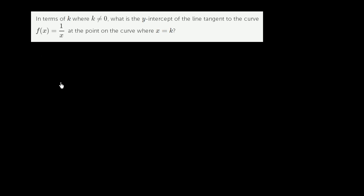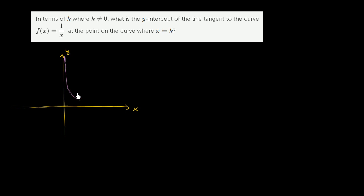So let's just think about what they're asking. Let me draw some quick axes right over here. So that's my y-axis, and this is my x-axis. The graph f of x equals 1 over x would look something like this — it spikes up, comes down, and goes like this on the positive side, and looks something like this on the negative side. So this is my hand-drawn version of roughly what this graph looks like. This right over here is f of x equals 1 over x.